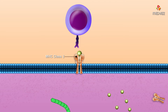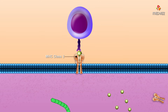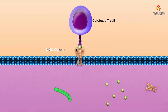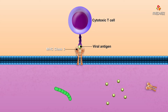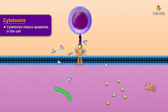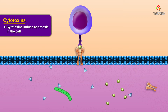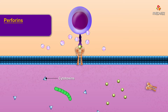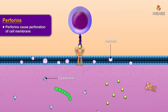Cytotoxic T cells interact with the virus-infected cells by recognizing both the viral antigen and the class 1 MHC. The cytotoxic T cell then releases cytotoxins, which induce apoptosis in the infected cell, and perforin, which causes perforations in the cell membrane.